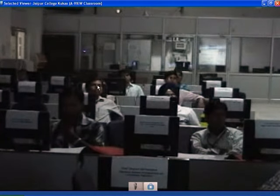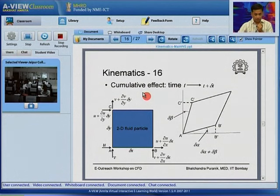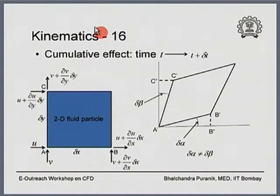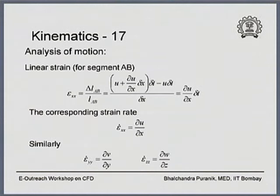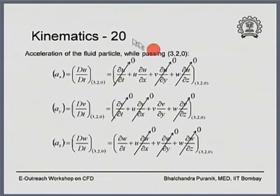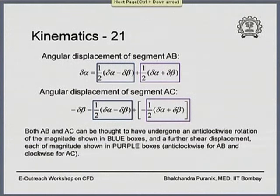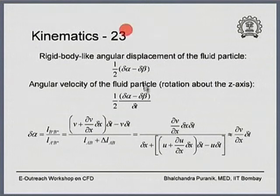Jaipur Engineering College: on kinematics slide 16, if delta alpha equals delta beta, what happens? You just equate delta alpha and delta beta in the corresponding expressions. If delta alpha equals delta beta, the angular velocity is not going to be there — delta alpha and delta beta cancel out each other — and the flow behaves as if it is irrotational.